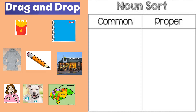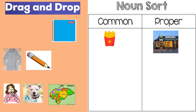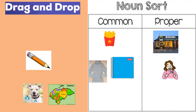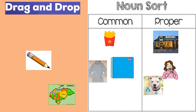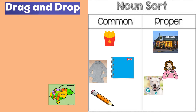In this part, you are going to help me classify the pictures into common or proper nouns. French fries — common noun. McDonald's — proper noun. Notebook — common noun. Sweater — common noun. A person named Anna or Sarah — that is a proper noun. A dog named Bobby has a proper noun. A pencil is a common noun. And finally, our country Honduras is a proper noun.